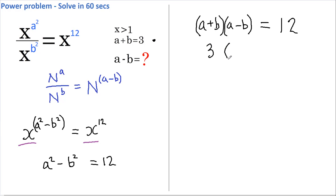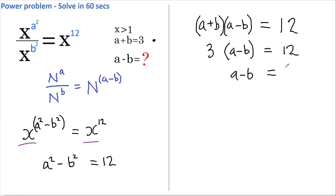Now we are already given the fact that a plus b equals 3. Therefore we can replace this with 3, and we get that 3 multiplied by (a minus b) equals 12. Then if we divide both sides by 3, we get that a minus b equals 4, and that was what we had to find — so that is our answer.